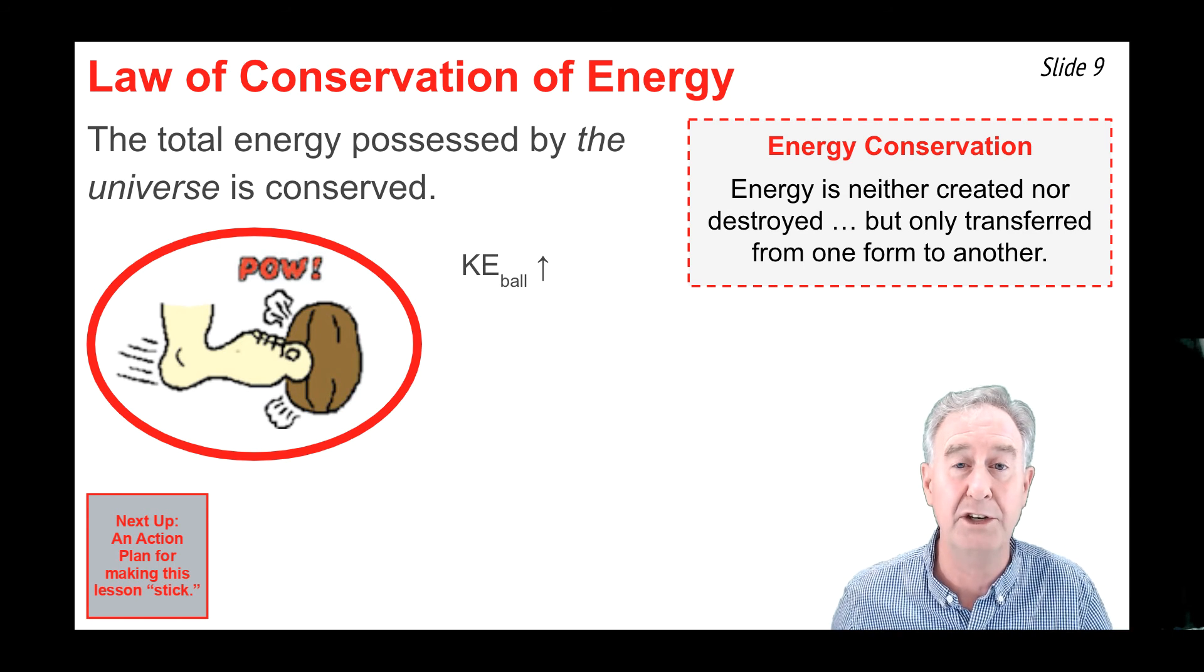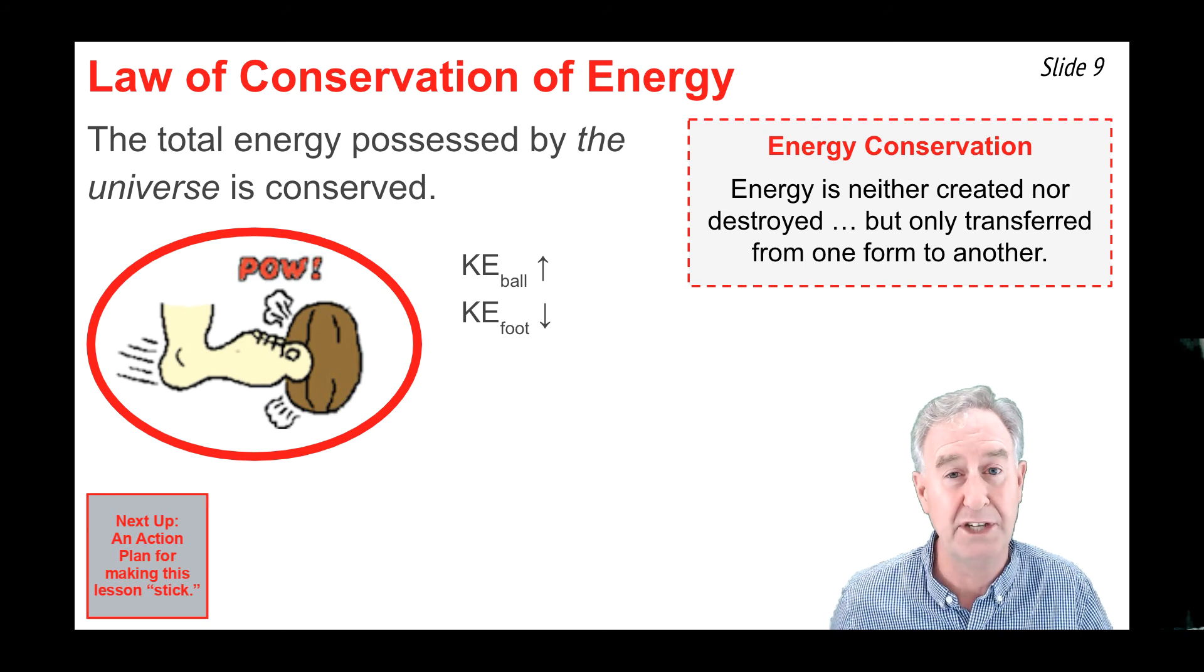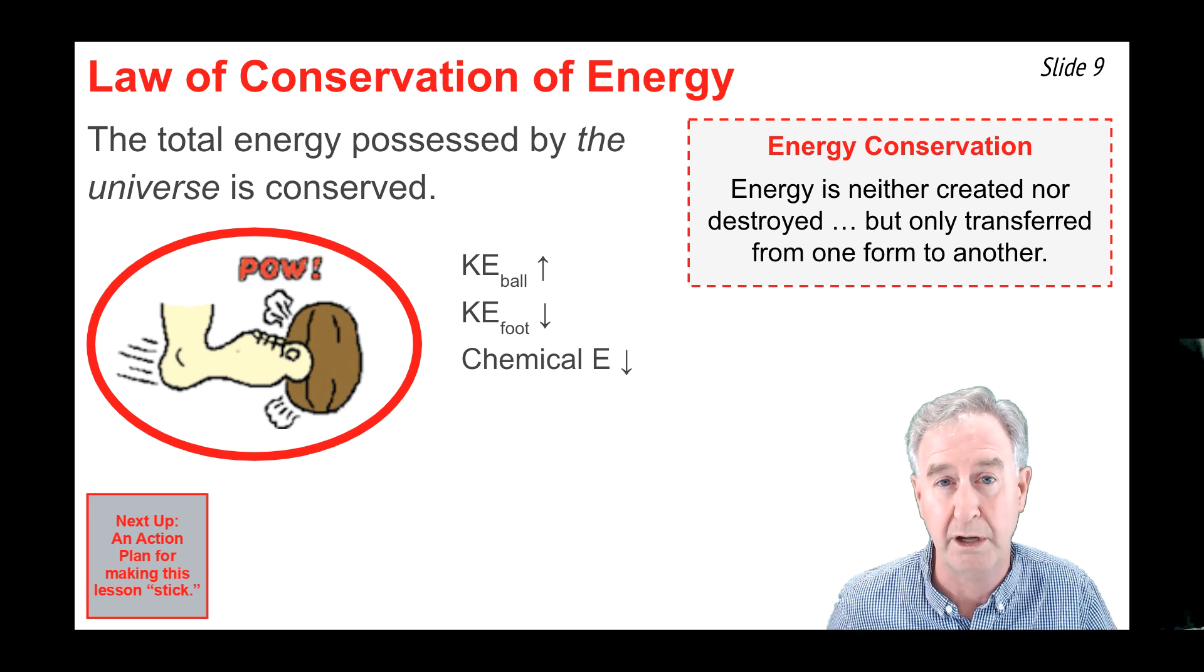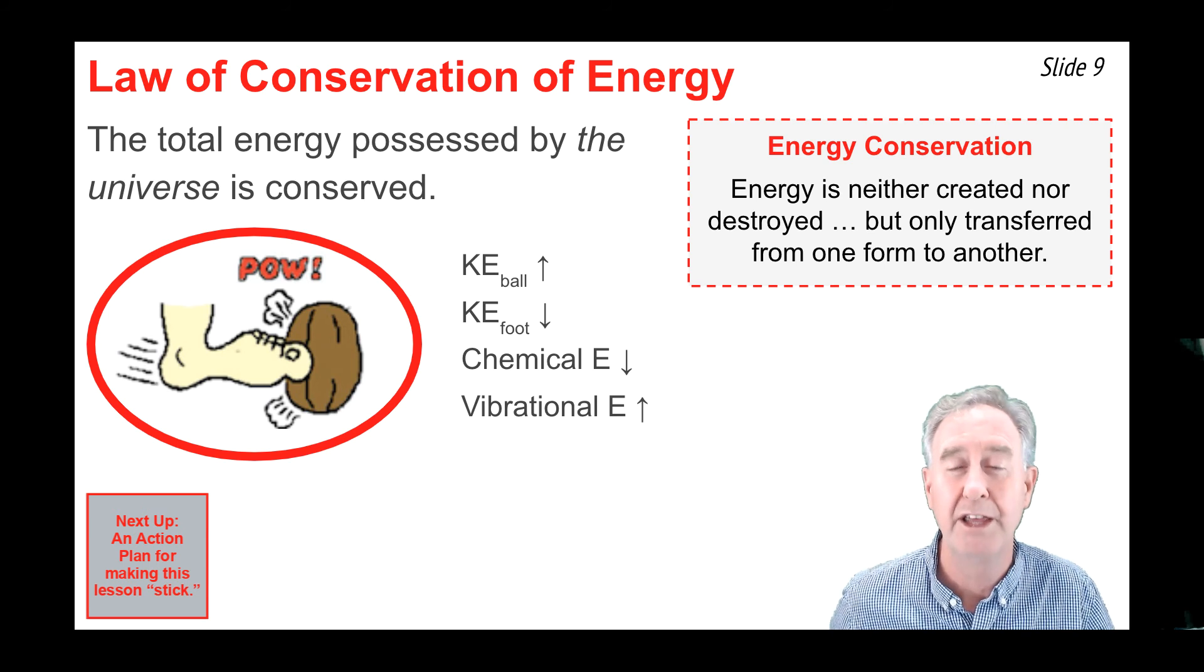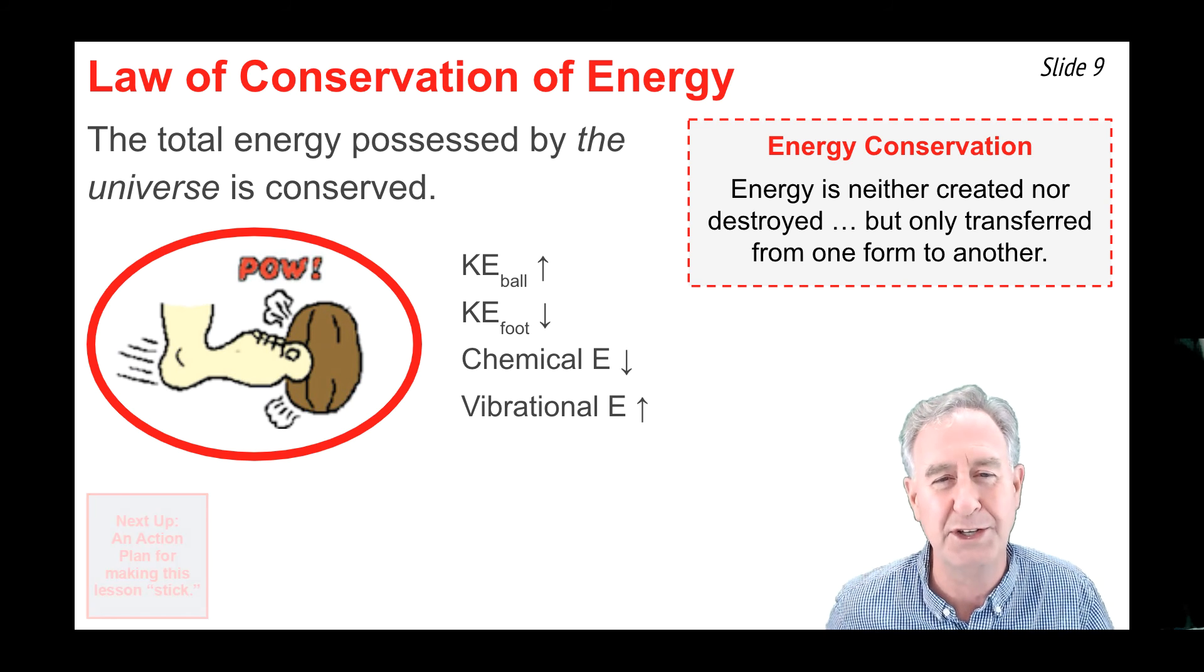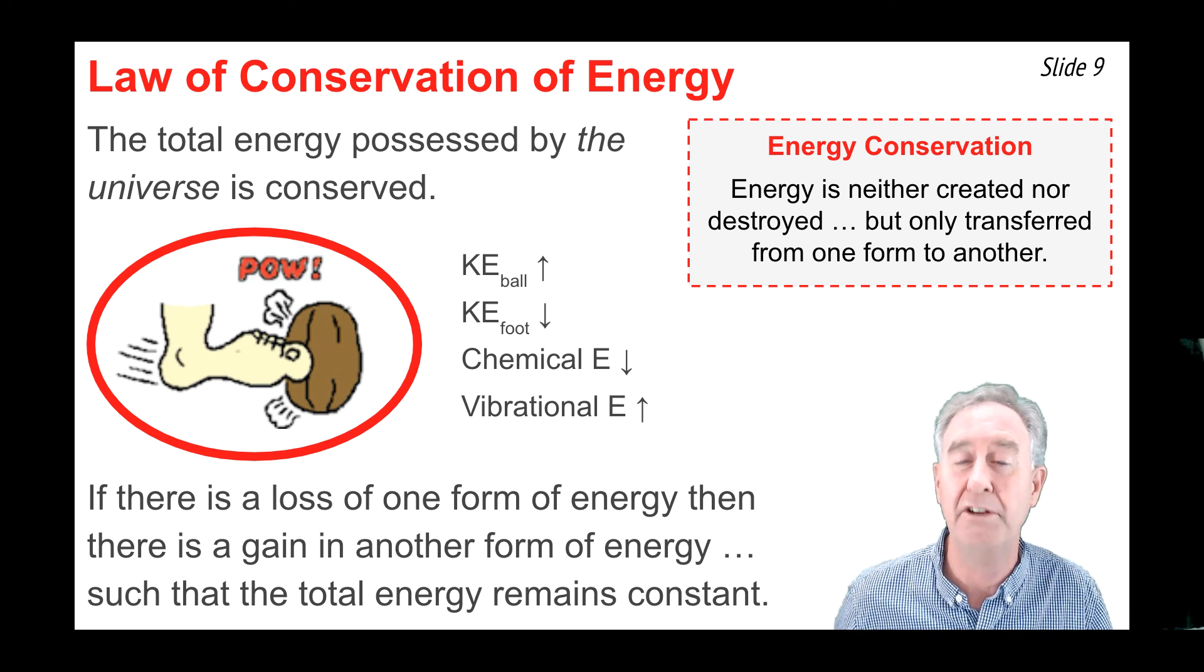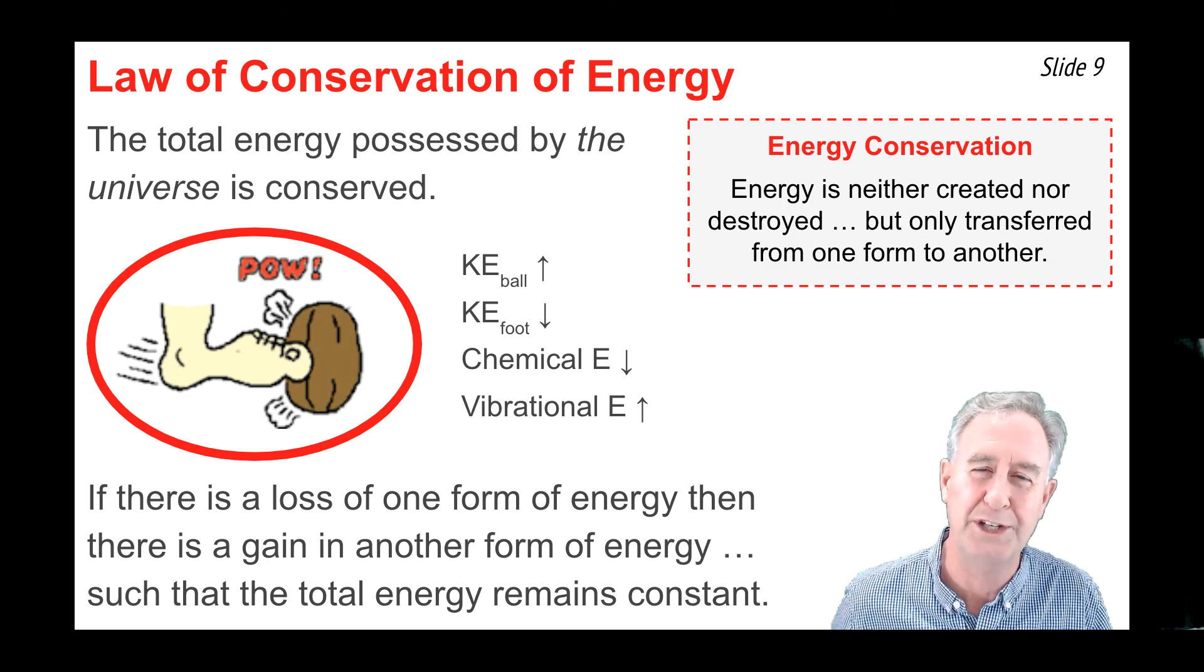First, the ball gained some kinetic energy when the foot kicked it, but the foot slowed down so it would have lost some kinetic energy. These are changes in mechanical energy occurring inside the universe, but there's also changes that occur in non-mechanical forms of energy. For instance, there's the expenditure of chemical energy by the football player in doing this activity of kicking the football. So chemical energy decreases, but there's also some vibrational energy changes. Upon collision between the foot and the football, the football begins to vibrate, even producing some sound, and that's vibrational energy. So there's all these changes occurring within the universe, but the total amount of change when you add up all the changes would be zero. That is, if there's a loss of one form of energy somewhere in the universe, there's a gain of another form of energy somewhere in the universe, such that the total amount of energy change in the universe is zero. That is, total energy is conserved.